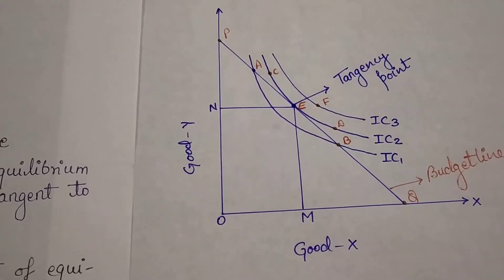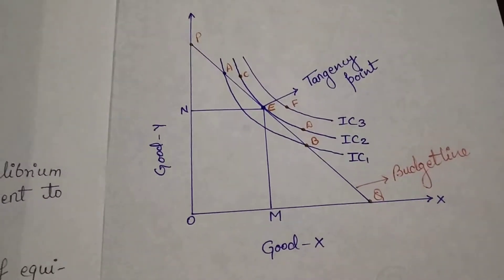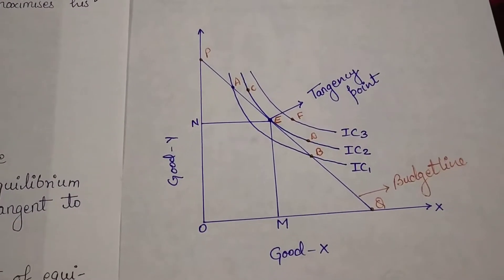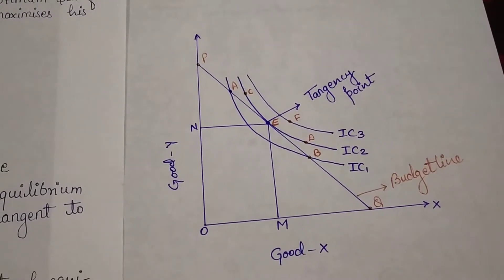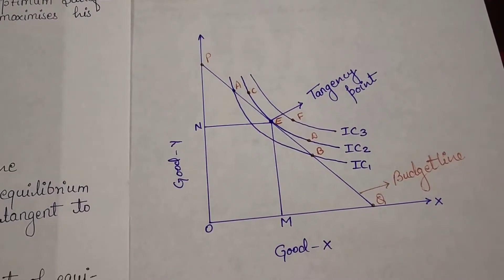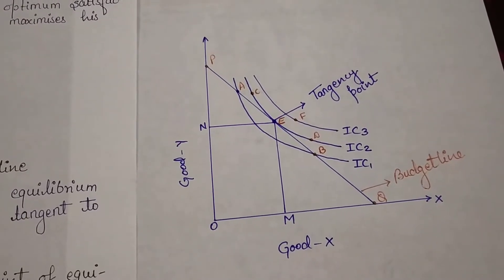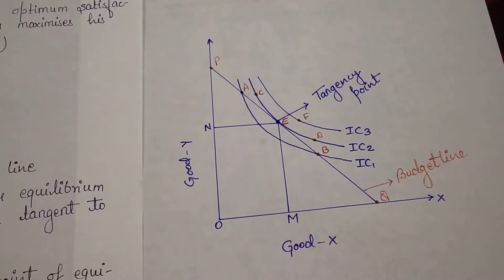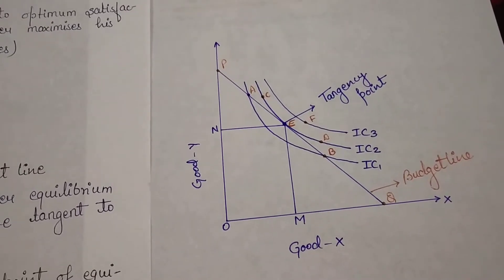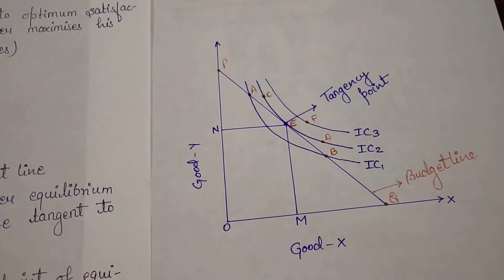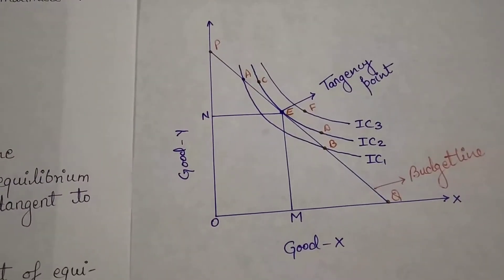Now if we will talk about IC2 curve. On IC2 curve, there are three points: point C, E, D. If we will talk about point C, on point C neither of the any conditions are satisfying. Nor the curve at point C is convex at the point of origin, nor at point C the IC curve is tangent to the budget line.